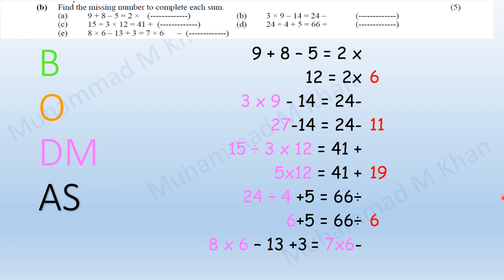For the last part, 8 multiplied by 6 is 48, and negative 13 plus 3 is negative 10. So the left-hand side equals 38. What should be deducted from 42 to make it 38? Obviously 4, so the last missing number is 4.